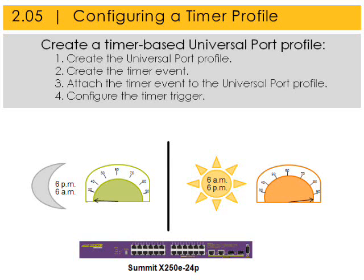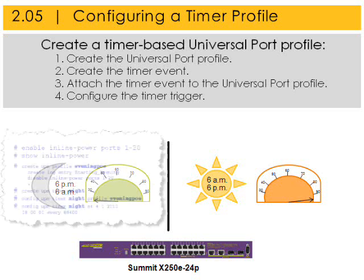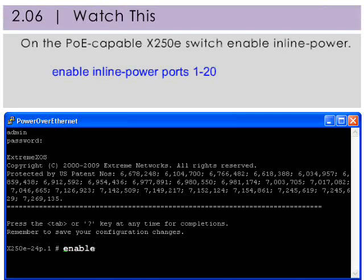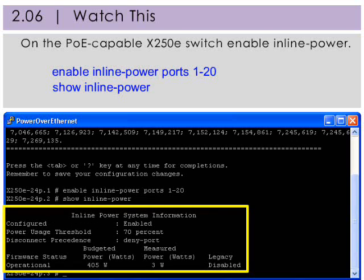Here are the steps we will follow. Because the dealership is open seven days a week from 7 a.m. to 5 p.m., we'll put the timer on a 12-hour shift — 12 hours on and 12 hours off. I'll configure the evening Power over Ethernet timer, and then you'll do the daytime Universal Port timer configuration. Using this command, I'm going to ensure the inline power feature is globally enabled on ports 1 through 20 where the PoE VoIP phones plug in.